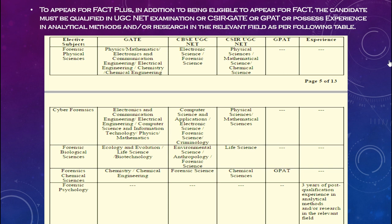If you are NET or GATE exam qualified, you will be eligible for the FACT Plus exam. There are two different divisions: FACT and FACT Plus. FACT is for graduate or postgraduate level students, but FACT Plus is specifically for those who have qualified CSIR, UGC NET, CBSE NET, GATE, or GPAT. If you have these qualifications, you are eligible for FACT Plus.